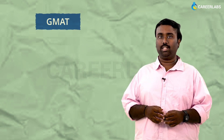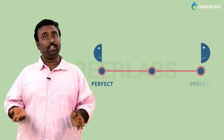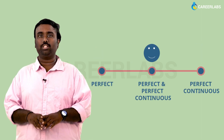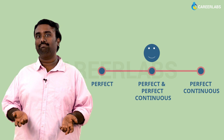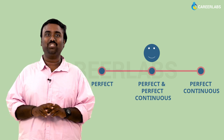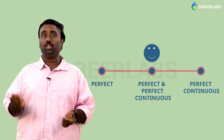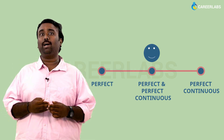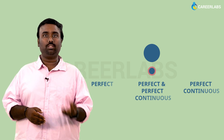The GMAT doesn't differentiate between perfect and perfect continuous, which means that the time clues and situations will be similar. That's a sign of relief — why? Because this immediately reduces the number of past tense structures from four to three. Now that we have this good news, let's dive right in.